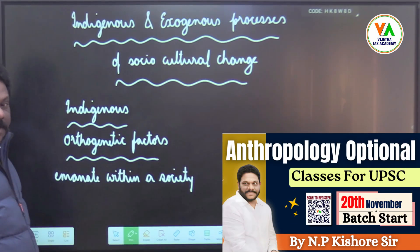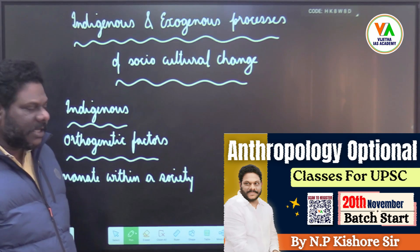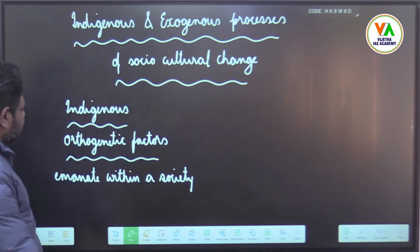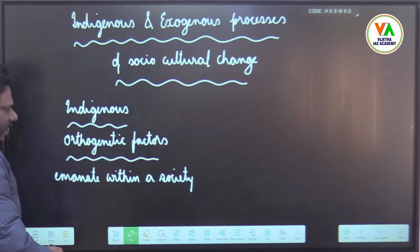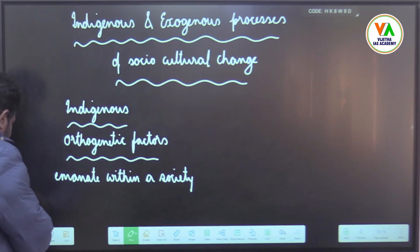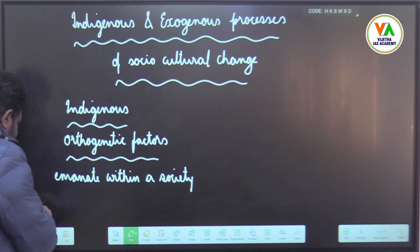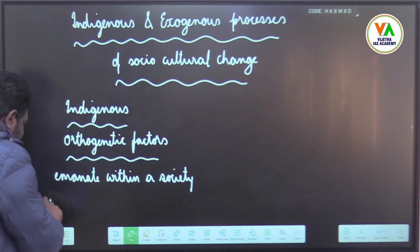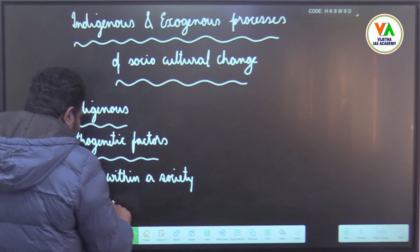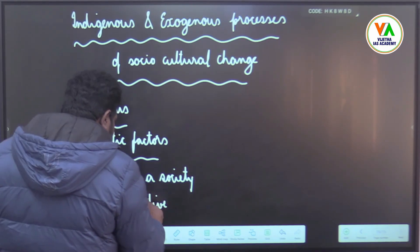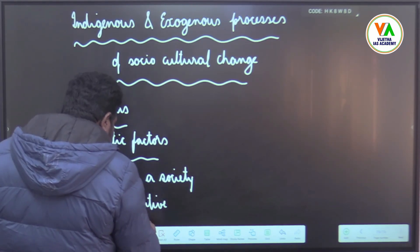There are certain factors which result in socio-cultural change which emanate from within a society. For example, you can take revivalistic movements, reformative movements, and nativistic movements.